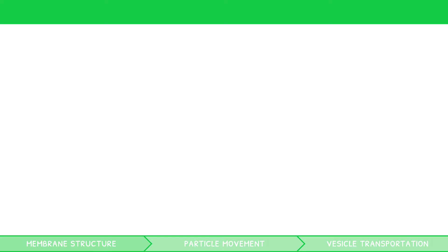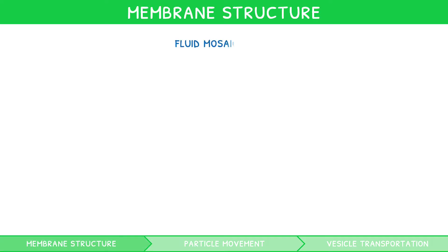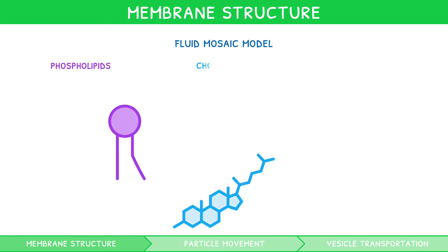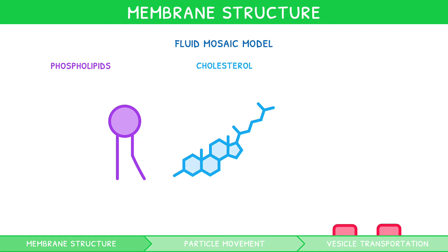Our current understanding of membrane structure is represented by the fluid mosaic model, which has three key components: phospholipids, cholesterol, and proteins.